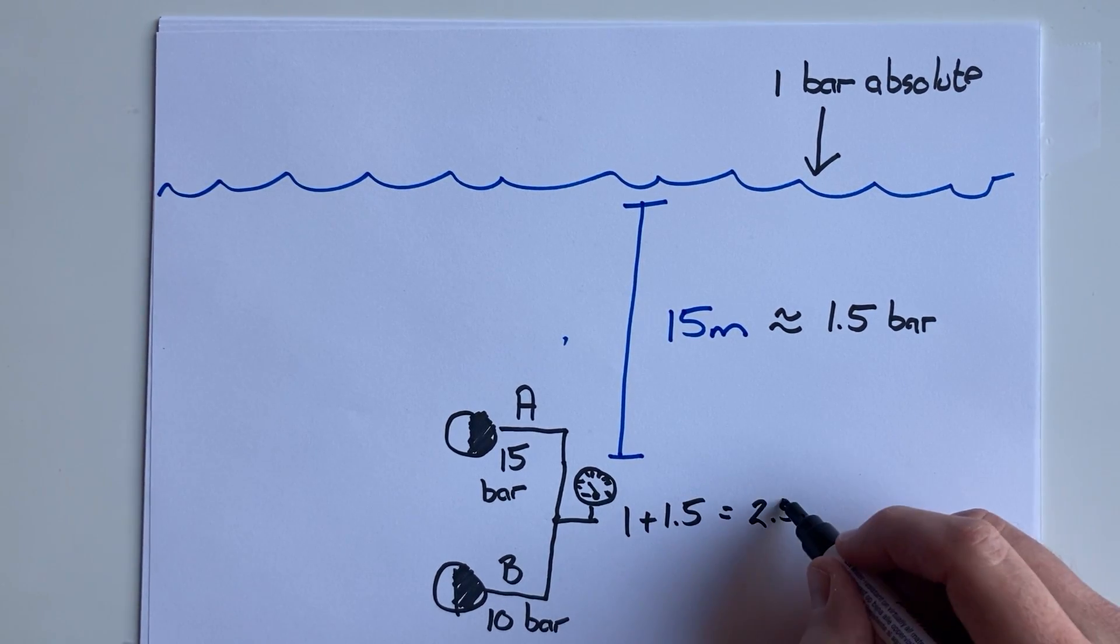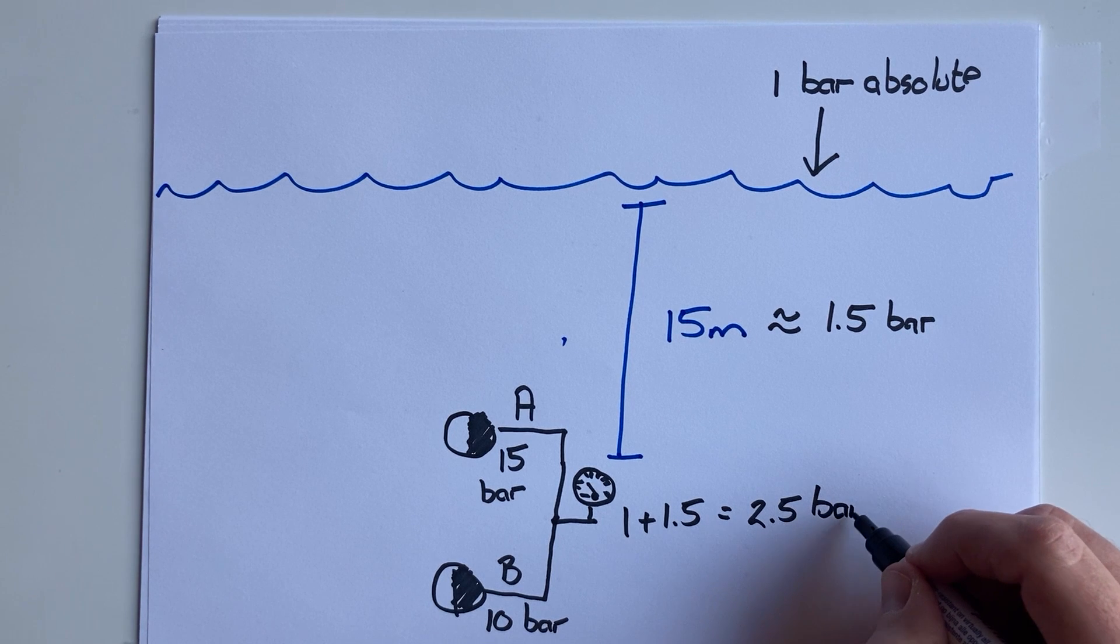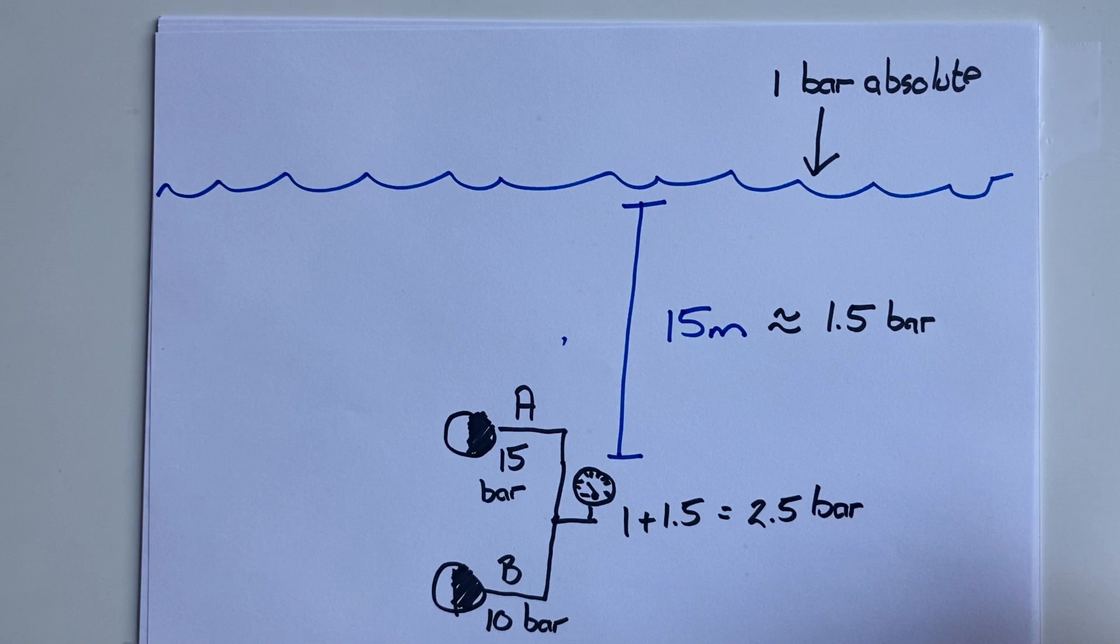Once again, it doesn't matter what the flow is. I'm unable to change the pressure of the ocean floor by putting more flow through the pipes. If the pressure was less than 2.5 bar after they'd mixed, then the ocean water would start running into our pipe because it would be at the higher pressure.